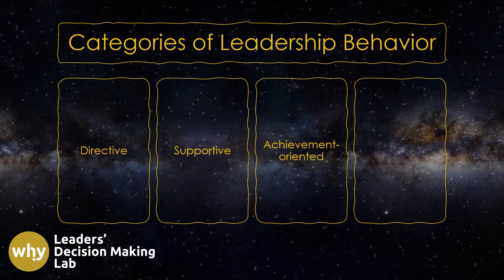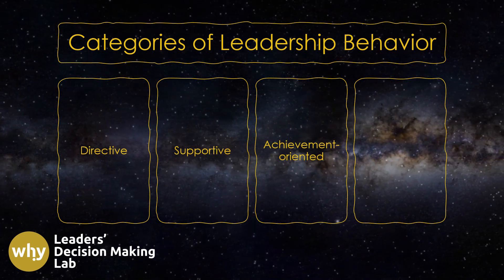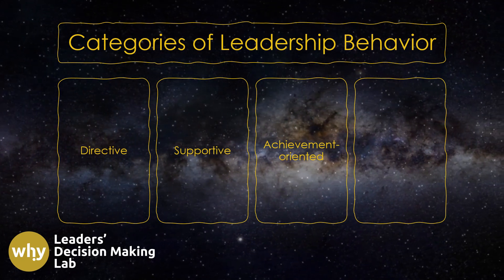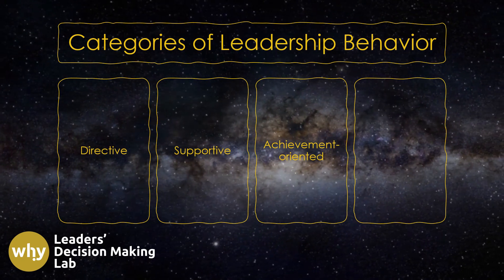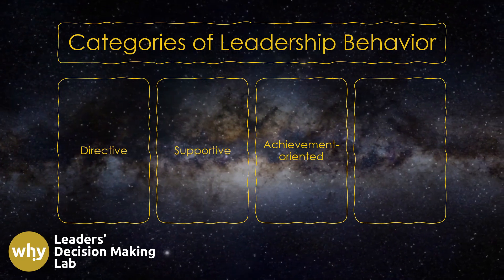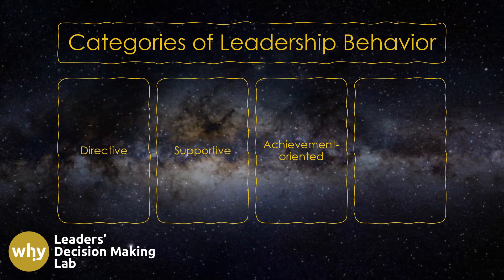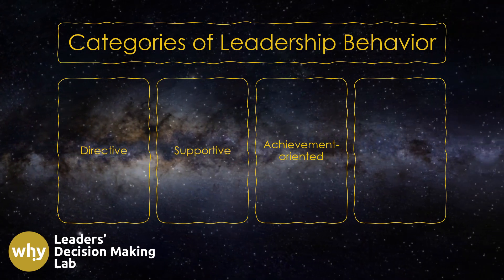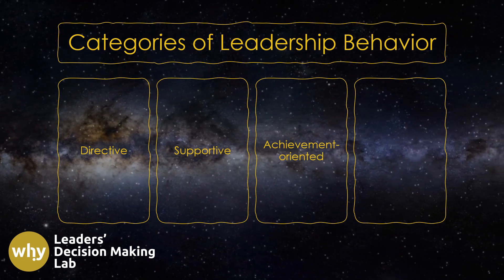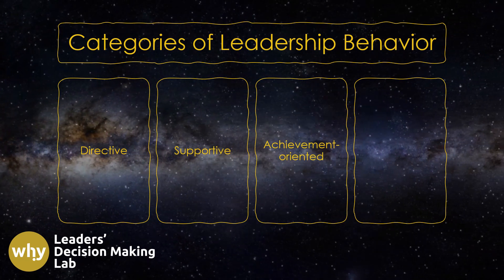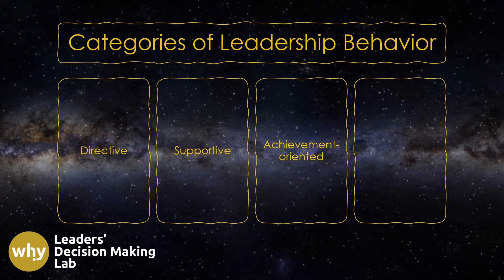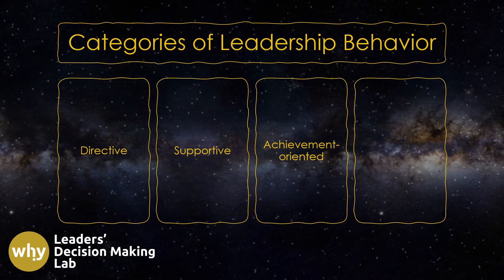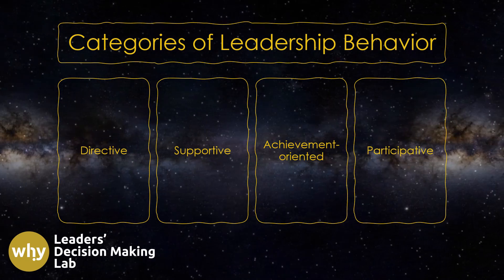Achievement-oriented behaviors focus on maximizing employee performance. Leaders using this category of behavior may set challenging yet attainable work goals, encourage employees to strive for excellence, and boost employee confidence to help them achieve high levels of performance.